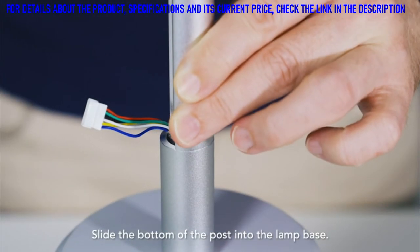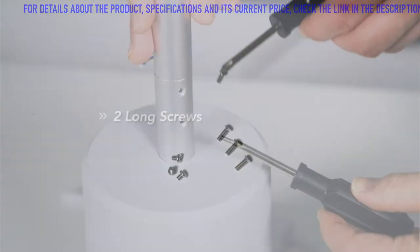Slide the bottom of the pole into the lamp base. Secure the pole with two long screws.